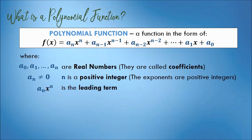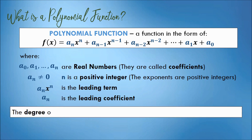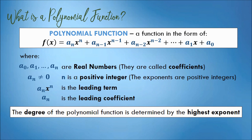The leading term is a_n times x raised to n. It is the term in the polynomial function with the highest exponent. And a_n is the leading coefficient — it is the coefficient of the leading term. The degree of a polynomial function is determined by the highest exponent; it is the exponent of the leading term.